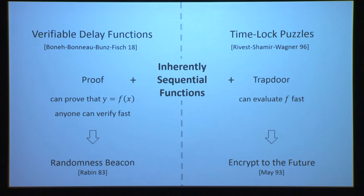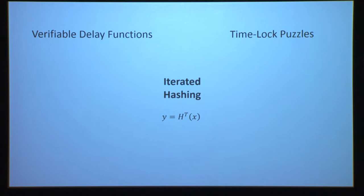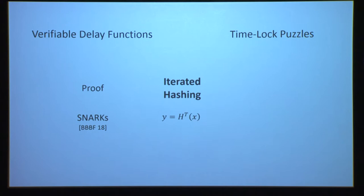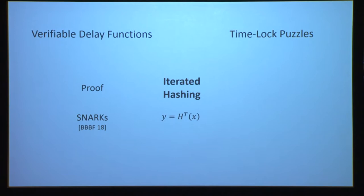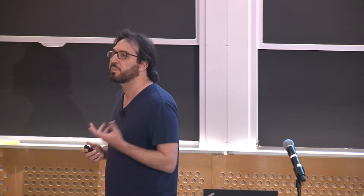These two notions of time-lock puzzles and VDFs are incomparable to each other, which becomes clearer when we go back to our examples of inherently sequential functions and turn them into VDFs and time-lock puzzles. For iterated hashing — or actually any inherently sequential function — you can turn it into a VDF by using SNARKs, succinct non-interactive arguments. These are proof systems with extremely efficient verification, so I can prove something like y equals f of x and anybody can verify much faster than reevaluating the computation. However, the major drawback of iterated hashing is that we have no idea how to use it for time-lock puzzles — we don't have any trapdoor that would allow us to accelerate this computation.